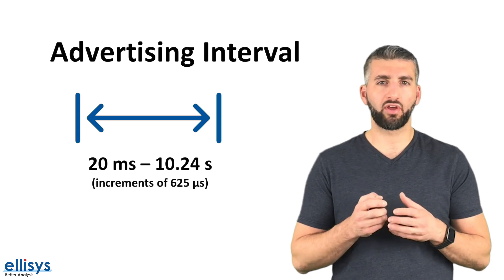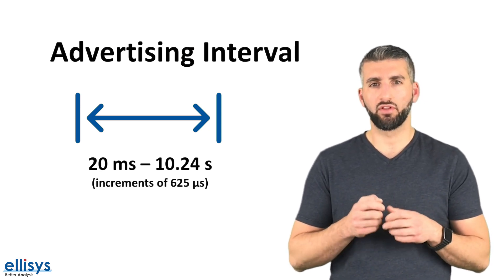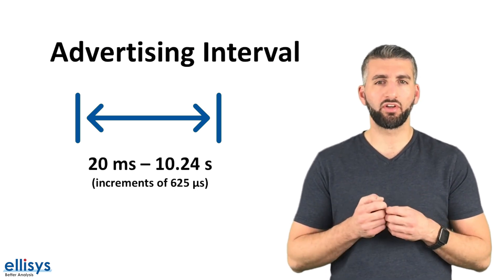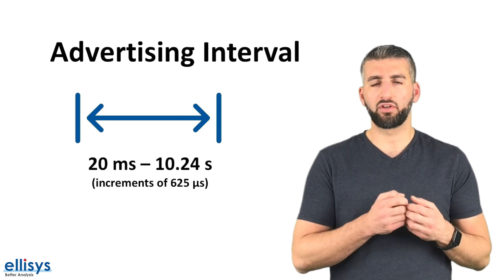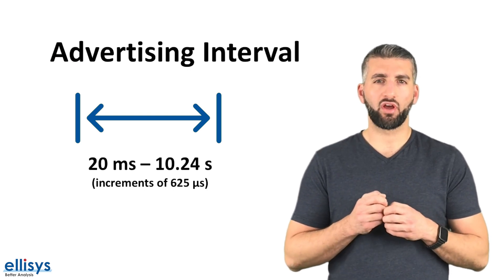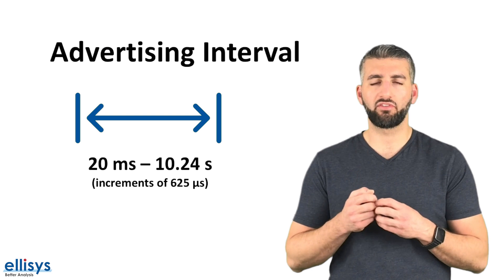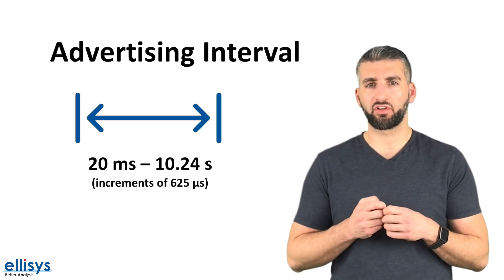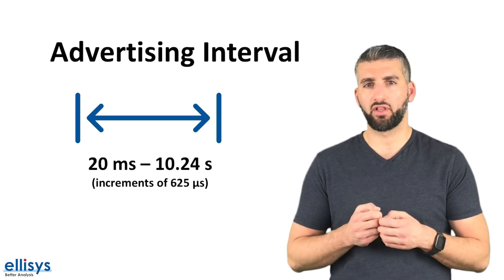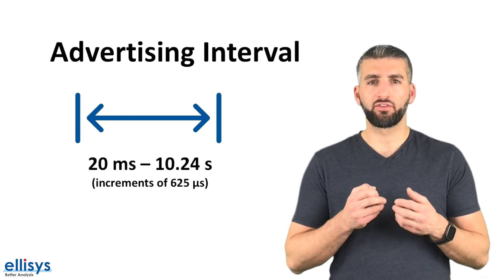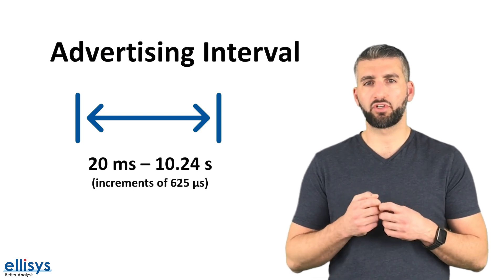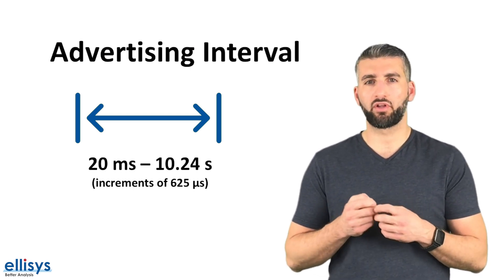The most important parameter related to advertisements is the advertising interval. This value defines how often a device sends out advertising packets. During this interval, the device will send out one advertising packet on each of the primary advertising channels or on a subset of these channels. The value of the advertising interval ranges between 20 milliseconds and 10.24 seconds in small increments of 625 microseconds. Keep in mind that this value greatly impacts battery life and must be chosen very carefully. It's recommended to choose the longest advertising interval that can still satisfy an acceptable user experience while achieving the lowest power consumption.